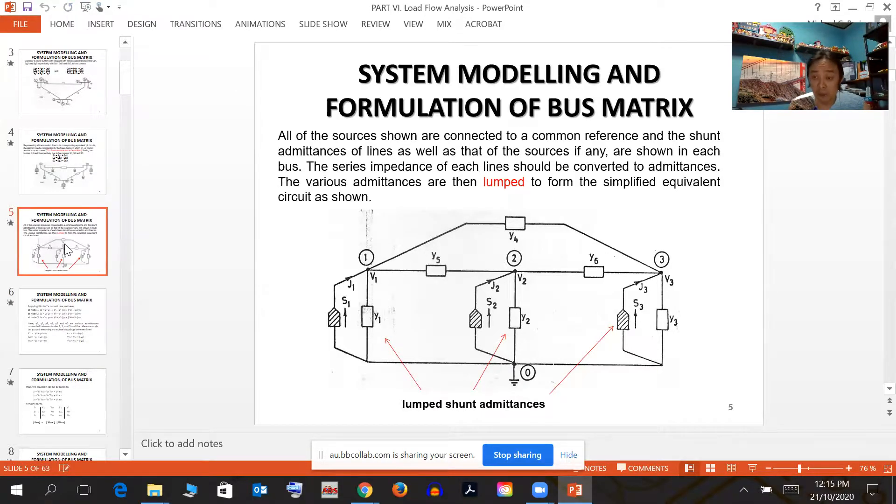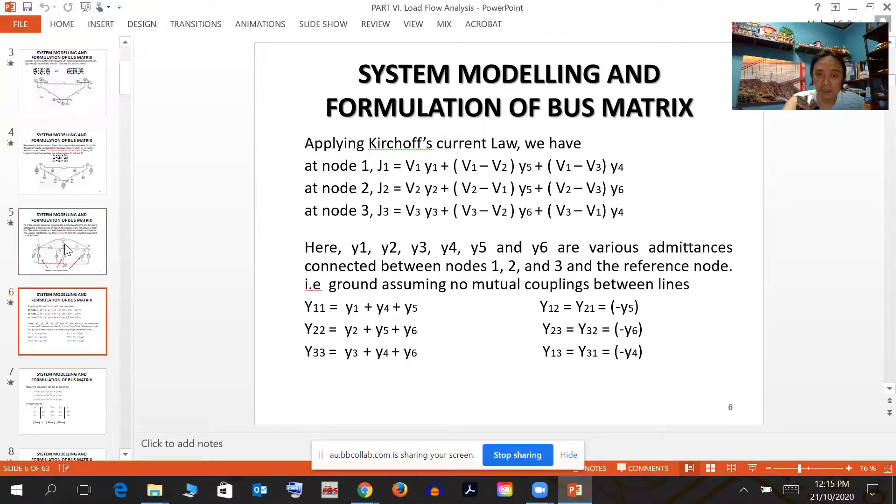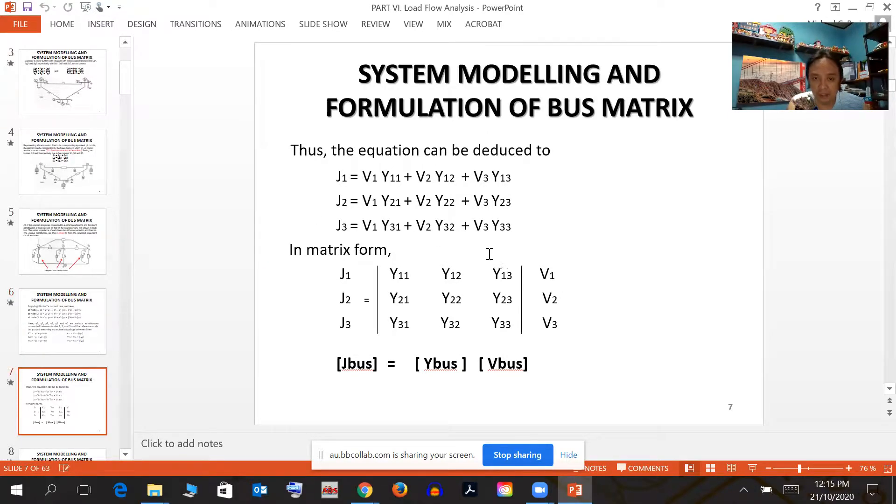We generalized the Y matrix, and then the Y matrix has two important parameters: the self-admittances, which is the capital Y_II, and the mutual admittances, which is Y_IJ equal to negative y_ij, the series admittance.